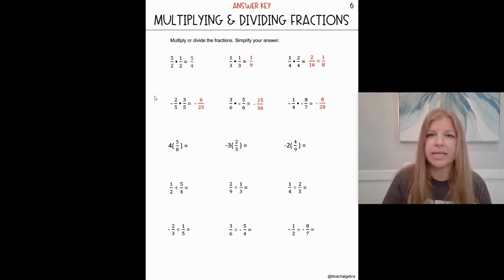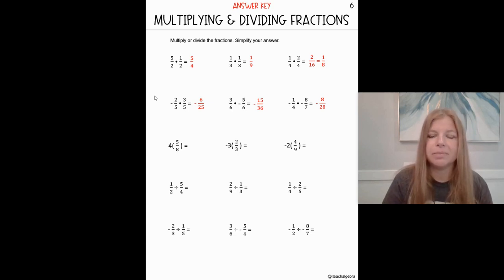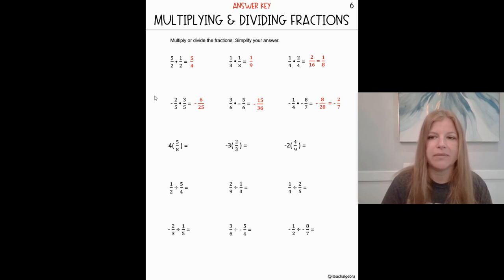Can I simplify eight twenty-eighths? Yes — by four. So let's simplify both by four, and we end up getting two sevenths.